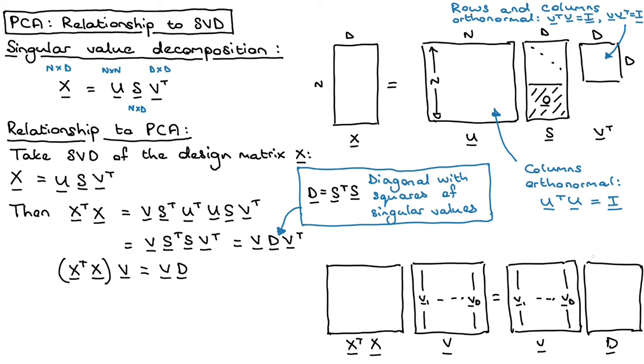And on the diagonal of the D matrix, we would have lambda 1, lambda 2, lambda D. And these V vectors, these are the eigenvectors. And these lambdas here, the squared singular values of X transpose times X, those are just the eigenvalues.